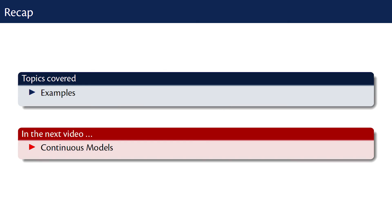In this video we looked at some examples, and I hope with these examples you have a good understanding of how one builds and simulates models of Boolean networks to understand signalling or gene regulation. In the next video we will look at continuous models, looking at dynamic models similar to those we saw earlier in the course for gene regulation and so on.